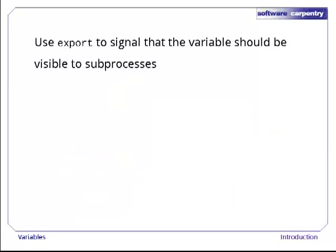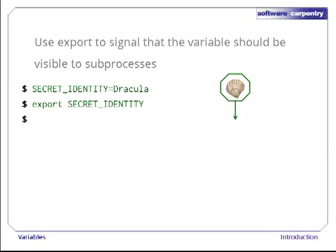If we really want the shell to pass a variable to the processes it creates, we must use the export command. Let's try the secret identity example again. After giving secret_identity a value, we give the shell the command 'export secret_identity'. Note, by the way, that it's not 'export $secret_identity' with a dollar sign. If we typed that, the shell would expand secret_identity, and our export command would actually be 'export Dracula', which would do nothing, because there's no variable called Dracula.